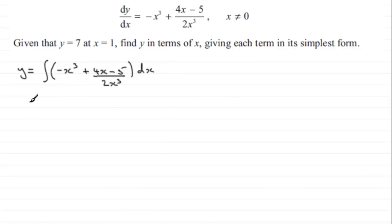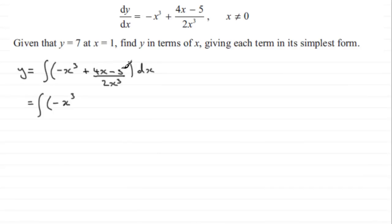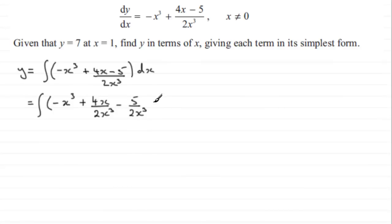To integrate this, the first term is straightforward — it's going to be minus x to the power 4 over 4. But it's the second term that we need to adjust. Because we've got two terms on the top, 4x and minus 5, divided by one term on the bottom, what I'm going to do is treat each term as being divided by the 2x cubed. So we've got 4x over 2x cubed, and then minus 5 all over 2x cubed, and all of this is integrated with respect to x.